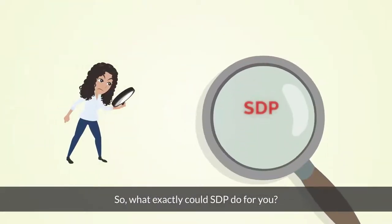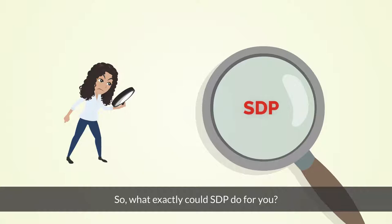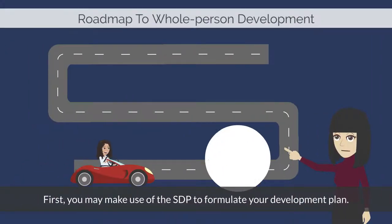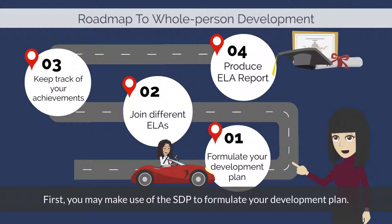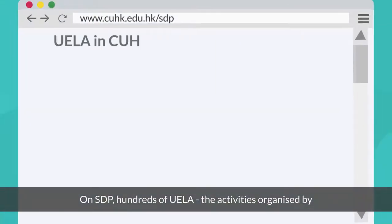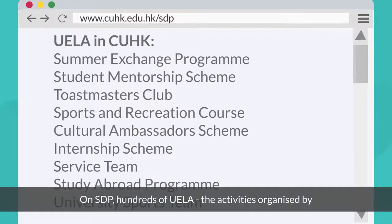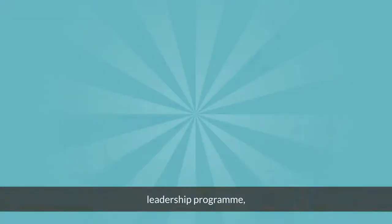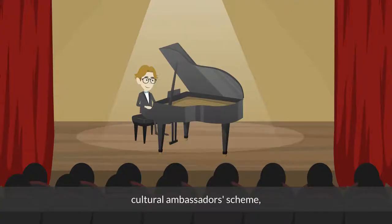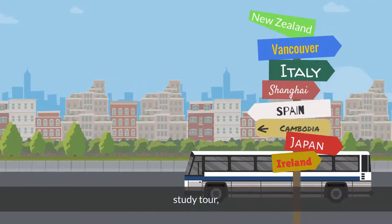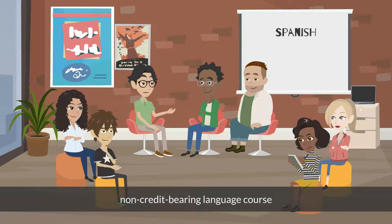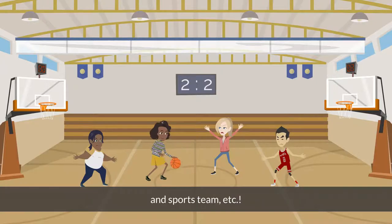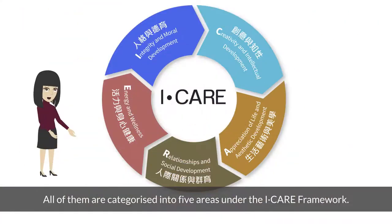So what exactly could SDP do for you? First, you may make use of the SDP to formulate your development plan. On SDP, hundreds of UELA — activities organized by various university units — are displayed. They include service projects, leadership programs, cultural ambassador schemes, study tours, non-credit-bearing language courses, sports teams, and more. All of them are categorized into five areas under the iCare framework.